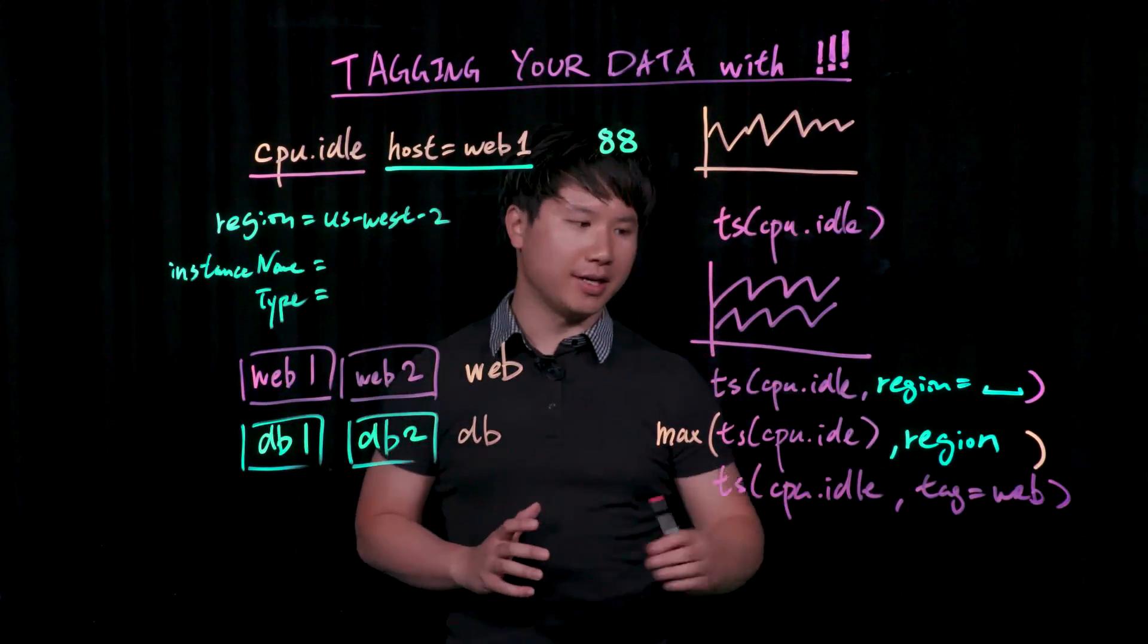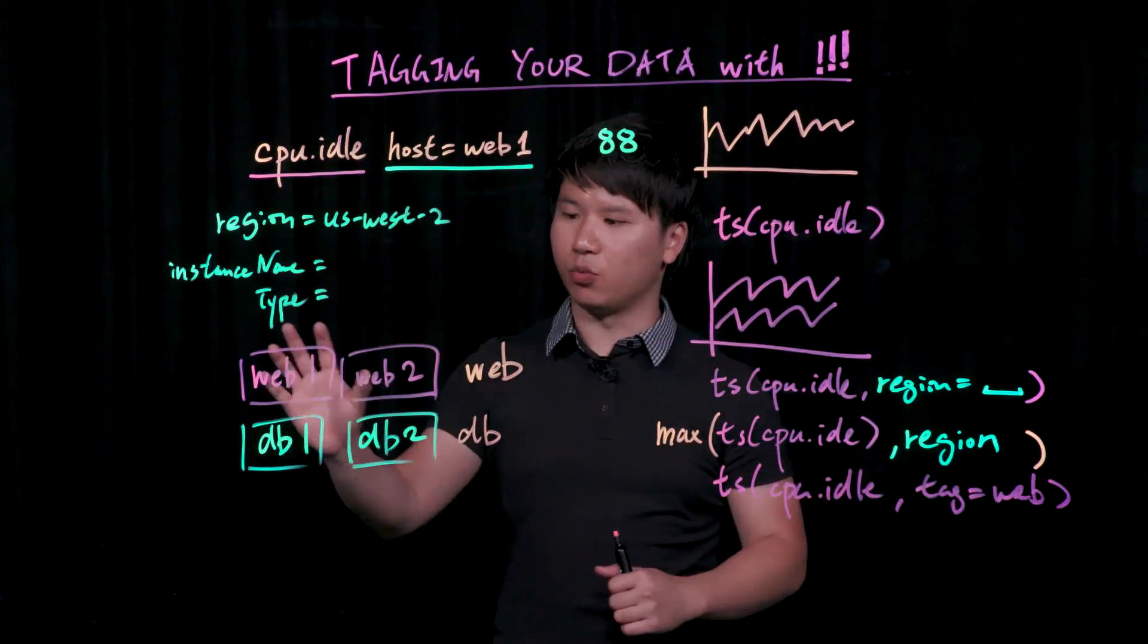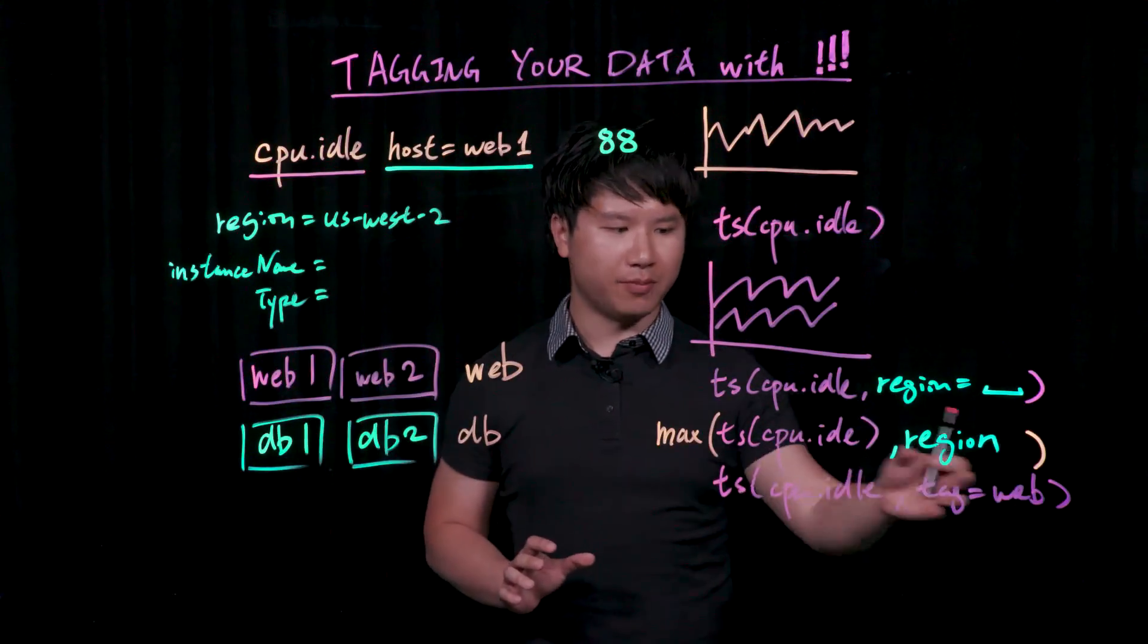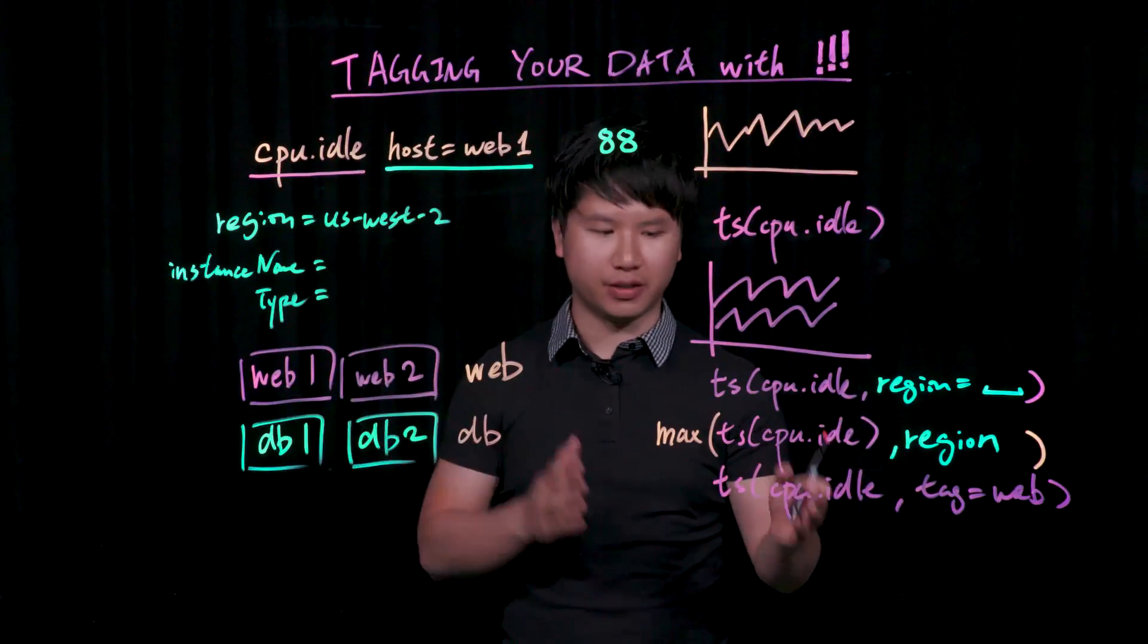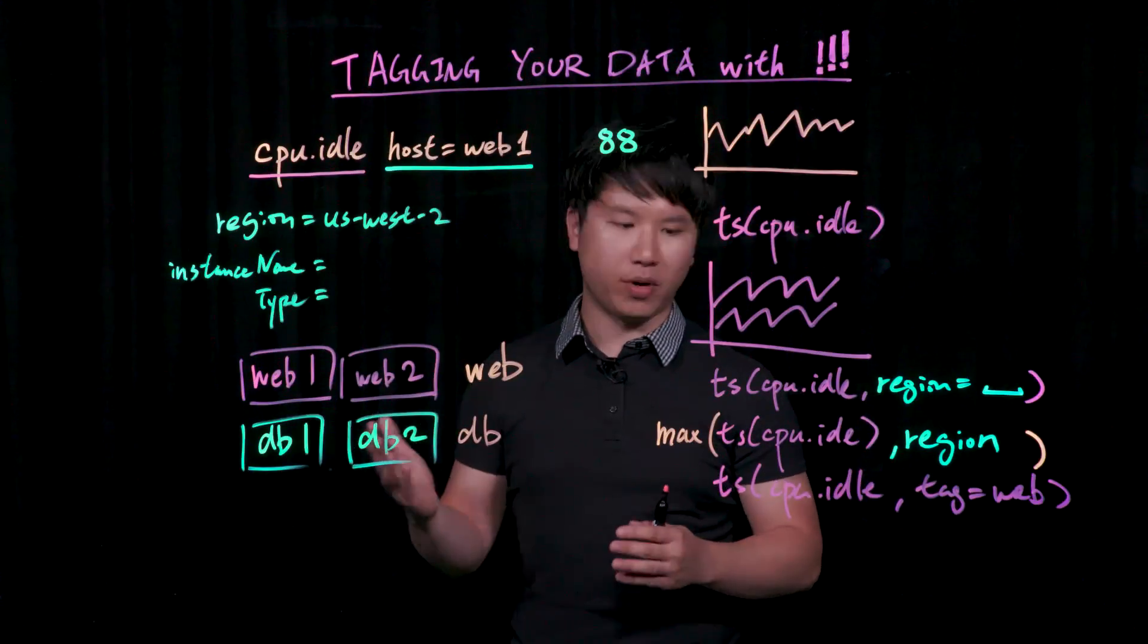What that really internally does is it expands the tag into web1 and web2, and then as a shorthand, you could very easily pull out just the CPU idle information from your web tier.